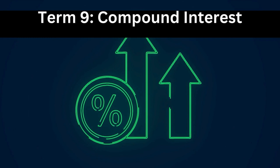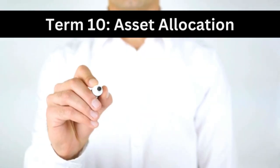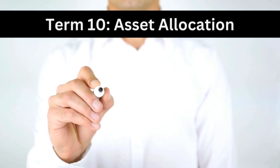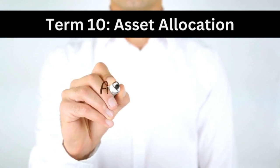Term nine: Compound Interest. Compound interest is the interest on a loan or deposit calculated based on both the initial principal and accumulated interest from previous periods.